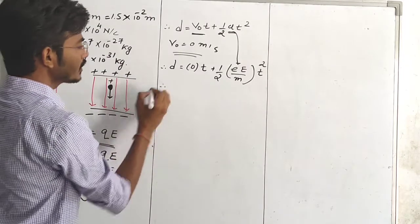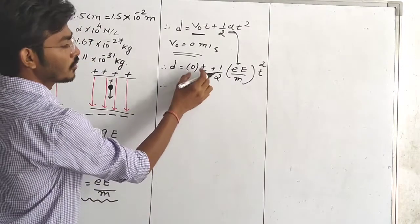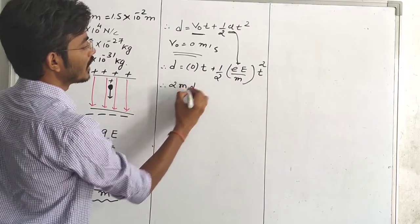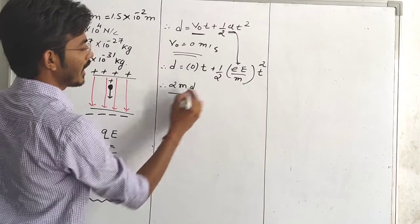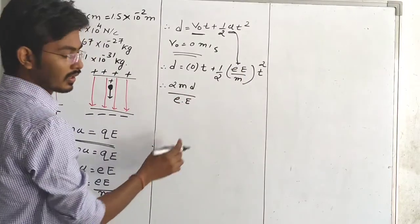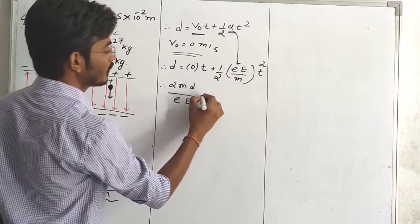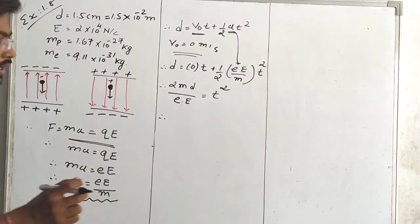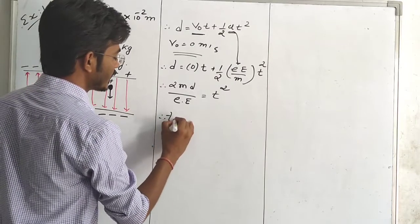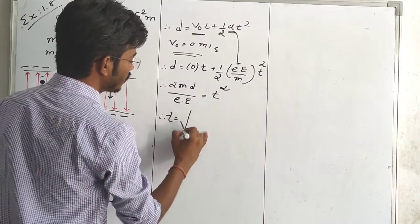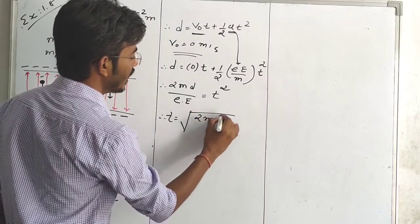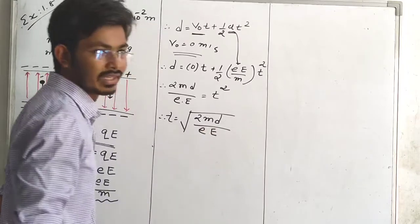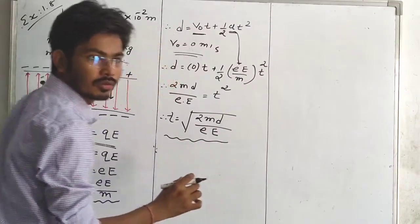So now simplifying this, D is equal to (small e into capital E divided by M) into T square, divided by 2. So T square is equal to 2MD divided by (small e into capital E). Therefore T is equal to the square root of (2MD divided by small e into capital E). This is our general equation for time.